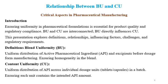Blend Uniformity is the uniform distribution of API across individual dose units like tablets and capsules in the batch. Content Uniformity is the uniform distribution of API across individual dose units like tablets, where each unit contains the intended API amount. For example, if you have an assay limit of 90% to 110%, it is required that each individual unit should contain the active substance or API within this range. CU can be achieved through Blend Uniformity, but it is not always the case that once you have Blend Uniformity, you will have Content Uniformity.